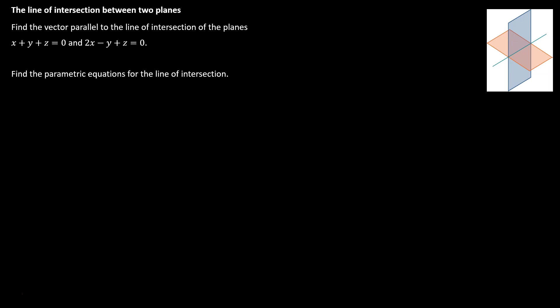Another neat application of understanding equations of lines and planes in space is that we can represent the intersection of two planes. On the screen you see a blue plane and a red plane, and if you could imagine having 3D glasses on, you could see that those planes are intersecting along the green line. We want to find that line of intersection — the parametric equations that represent that green line. To do that, we'll look at each of the equations for the planes, labeling them as the blue plane and the red plane.